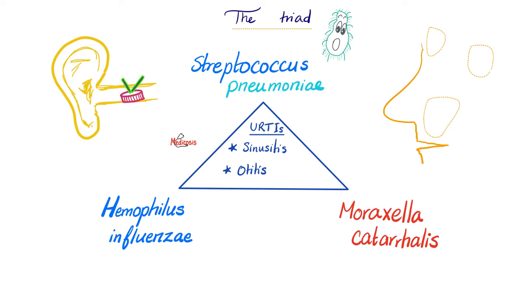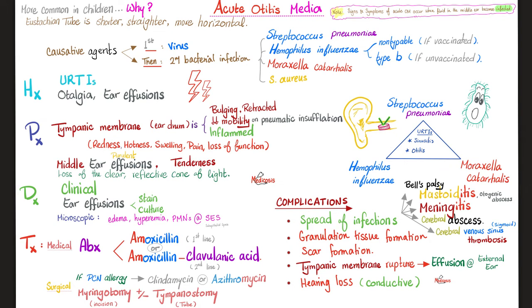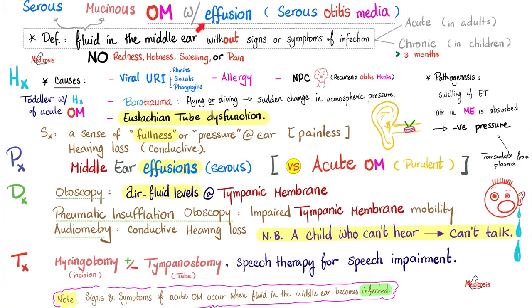The bacterial triad that causes otitis media or sinusitis is Streptococcus pneumoniae, Haemophilus influenzae, and Moraxella catarrhalis. We have talked about acute otitis media before. The key word is acute purulent discharge, bulging tympanic membrane with decreased mobility, loss of the clear reflective cone of light on otoscopy. Management is medical — for the most part, amoxicillin — or surgical: myringotomy and maybe with tympanostomy tube placement. Acute otitis media can be complicated with mastoiditis. As for otitis media with effusion, the key word is no infection, i.e., not purulent.